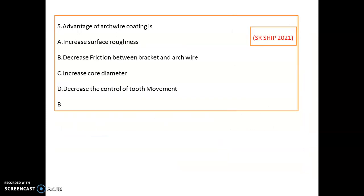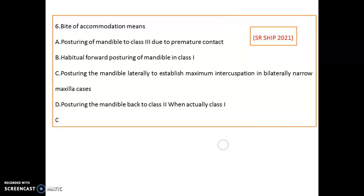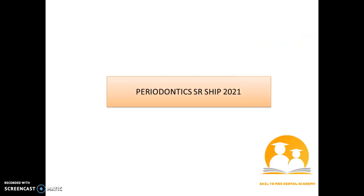The advantage of arch wire coating is decreased friction between the bracket and arch wire. What is the bite of accommodation? It is the posture of the mandible, shifted laterally to establish maximum intercuspation, in cases of bilaterally narrow maxilla.